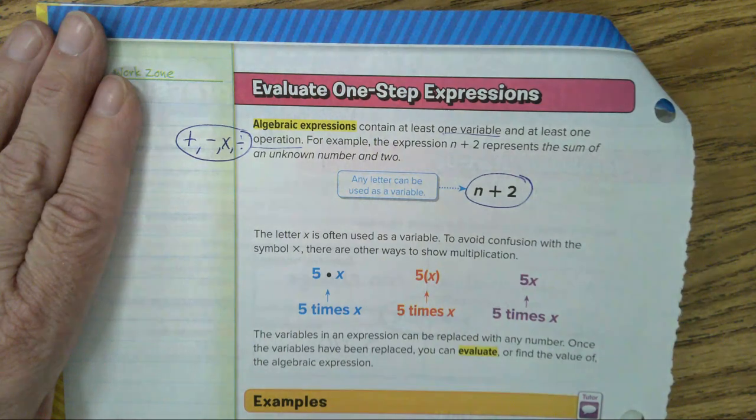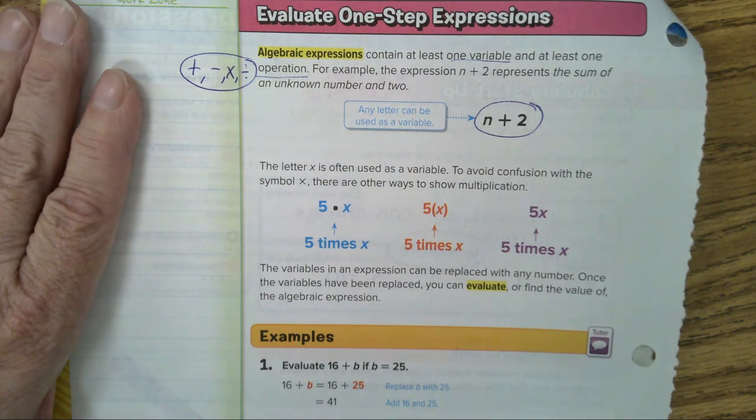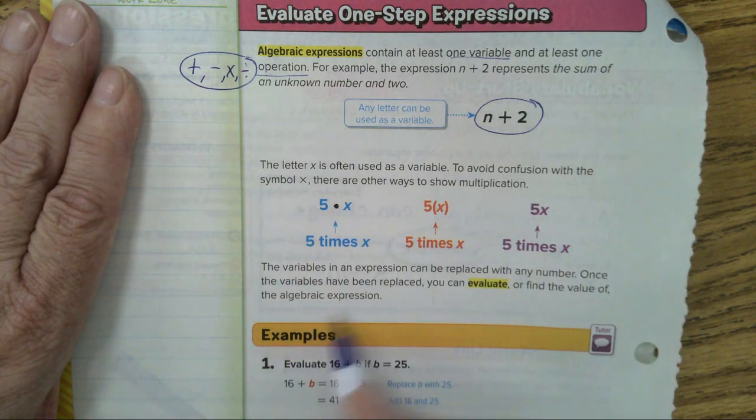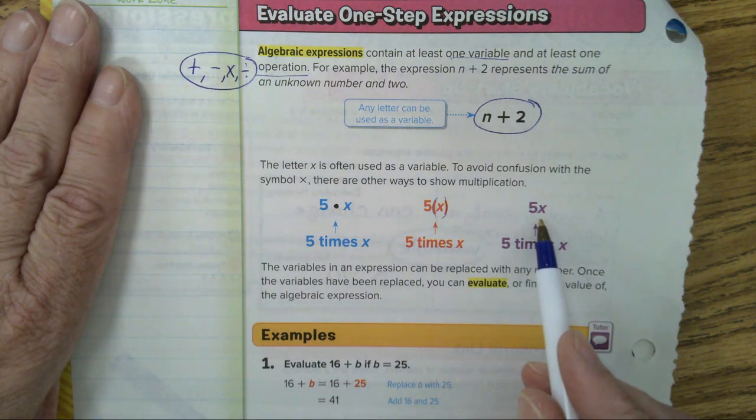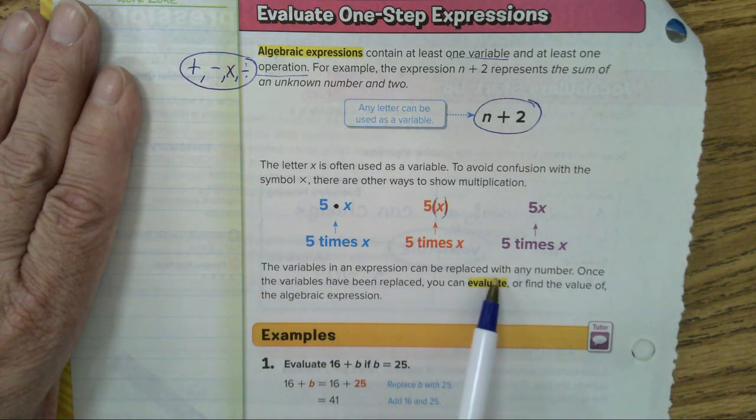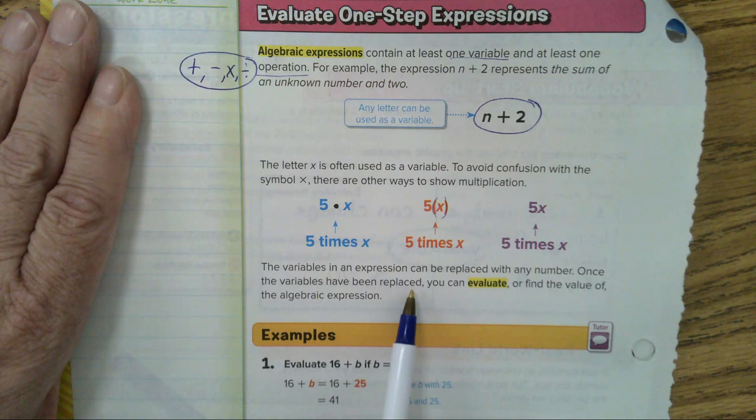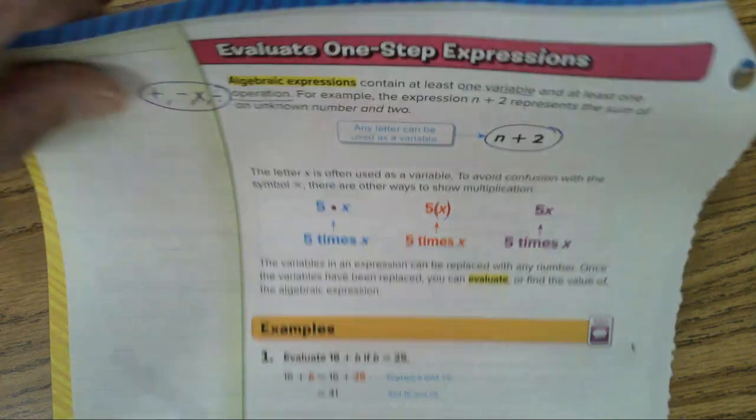Let's go on to this part. The letter x is often used as a variable. To avoid confusion with the symbol x, there are other ways to show multiplication. A dot can mean multiplying. This is my favorite parentheses. And when you have a number next to a variable, that also means multiplying. The variables in an expression can be replaced with any number. Once the variable, that's your letter, variables have been replaced, you can evaluate or find the value of the algebraic expression.